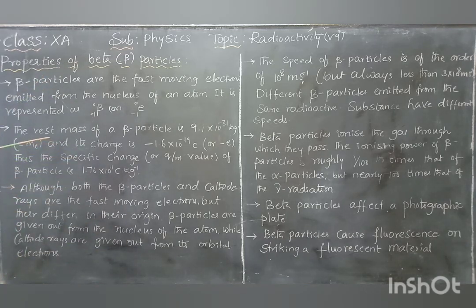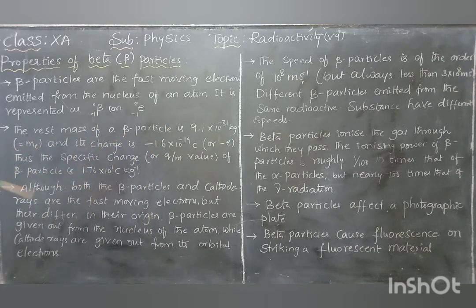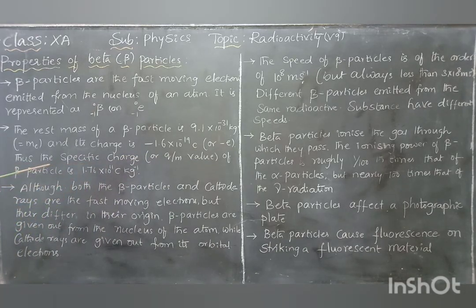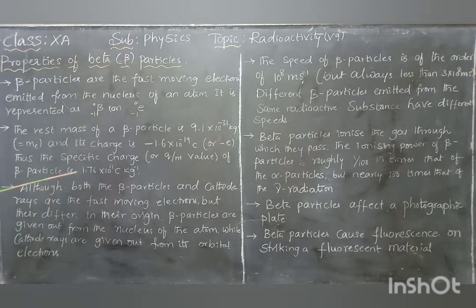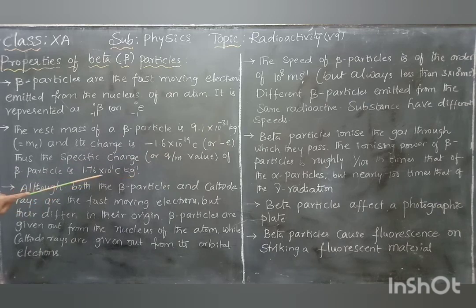The second property is the rest mass of the beta particle. The mass of the beta particle is 9.1 × 10⁻³¹ kg, which is the same as the mass of an electron. Its charge is also −1.6 × 10⁻¹⁹ C. The specific charge, meaning charge-to-mass ratio, is a very important quantity — calculated as charge divided by mass per unit mass.